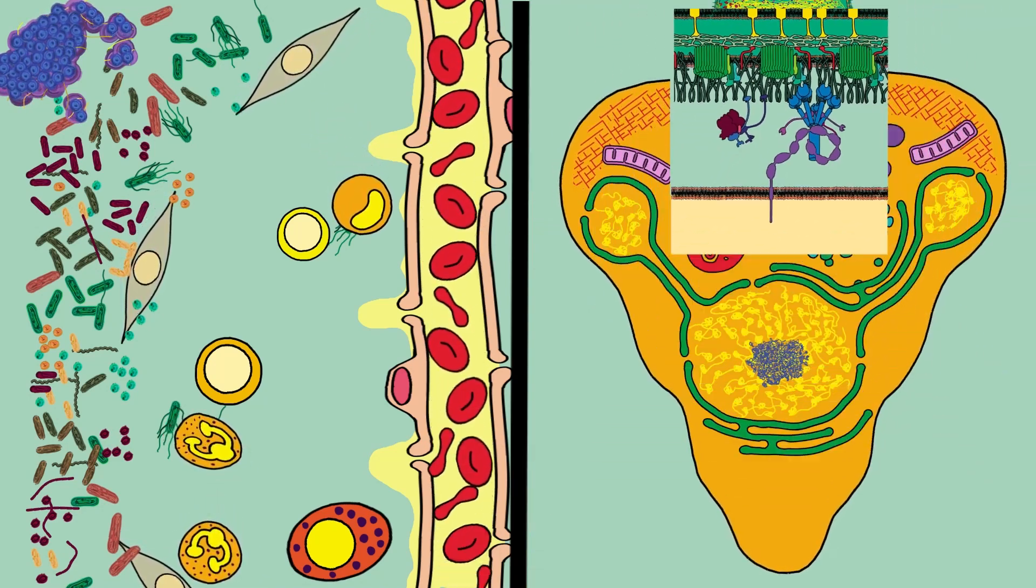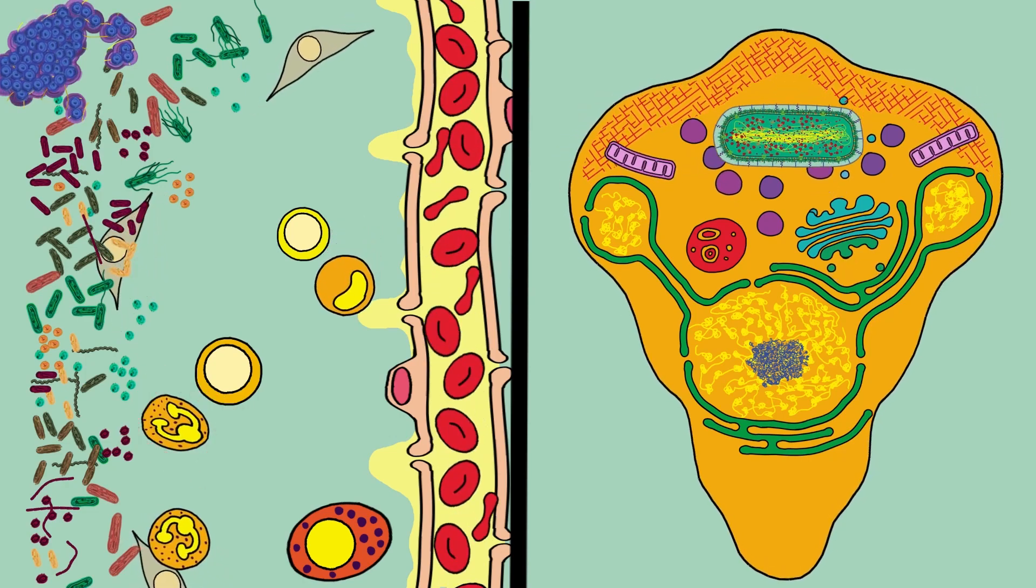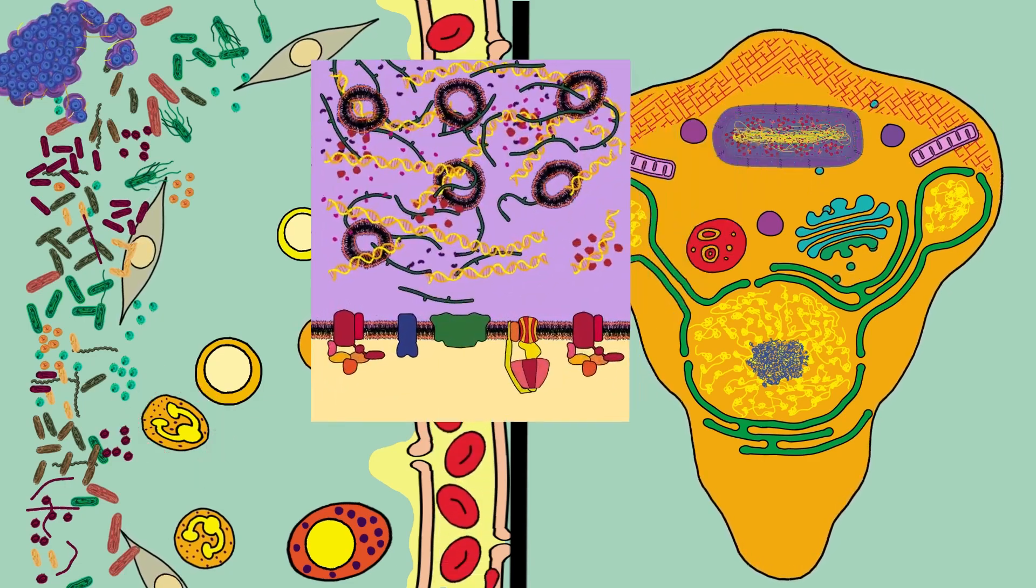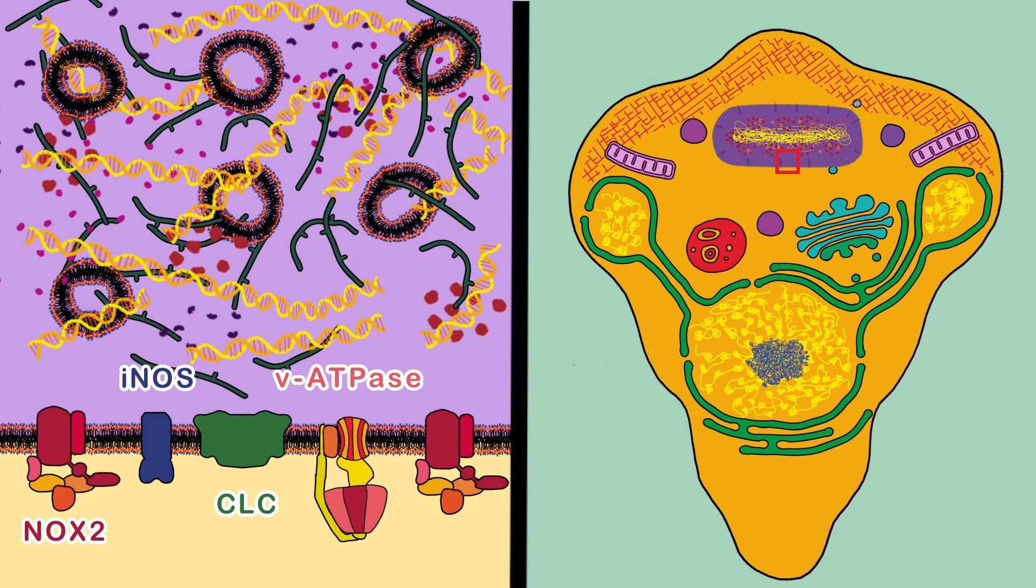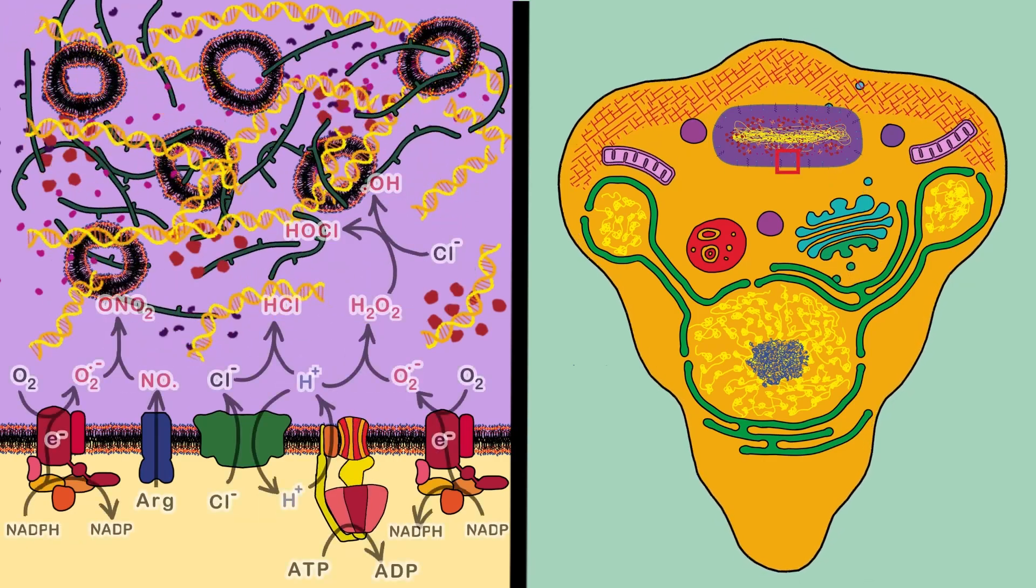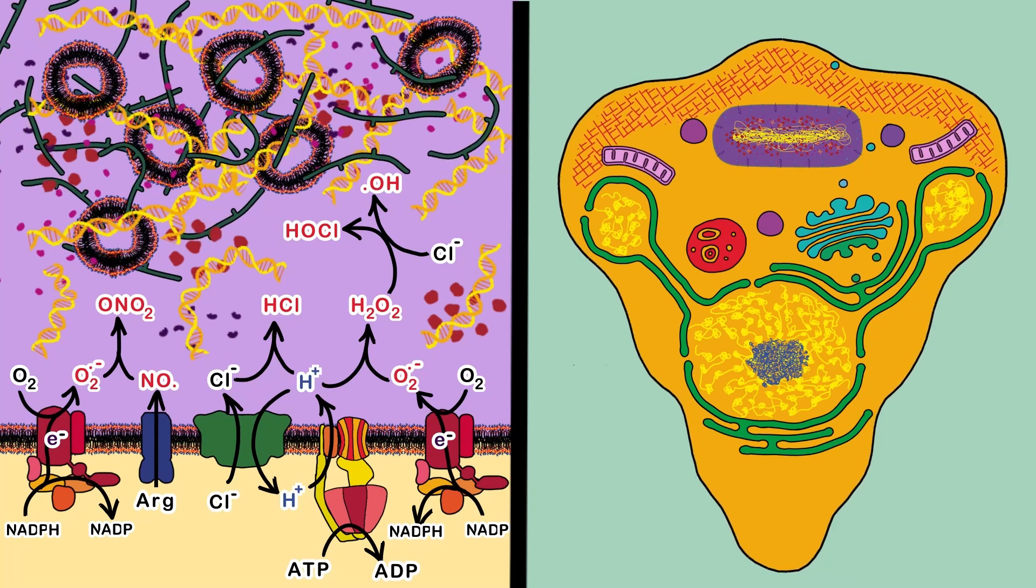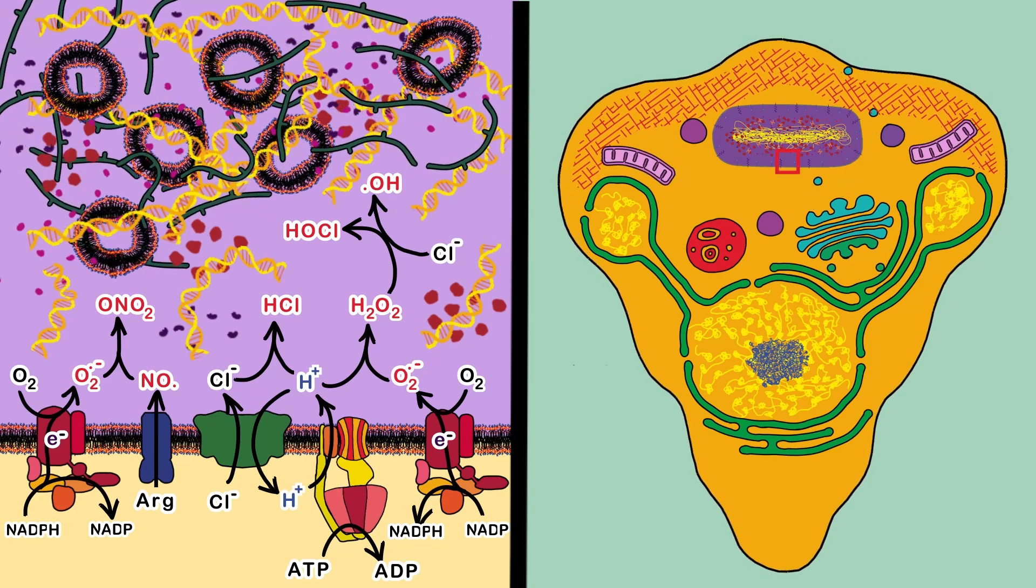To eliminate them, phagocytes eat them and enclose them in vesicles named phagosomes, which consequently fuse with other vesicles named granules. The granules contain membrane proteins that lower the pH to 3.5 and produce highly reactive molecules like superoxide, hydrogen peroxide, oxygen radicals, hydroxyl radicals, hypohalite, and nitric oxide.